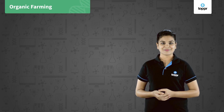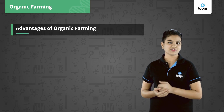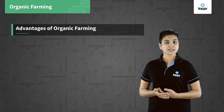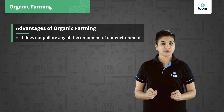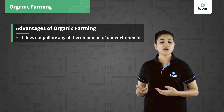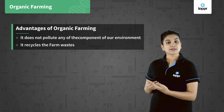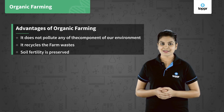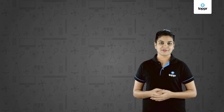The advantages of organic farming are: it does not pollute any component of our environment — land, soil, water, or air; it recycles farm waste; and it preserves soil fertility. In this lesson, we have seen how crop production can be increased by proper nutrient management — by providing nutrients to the soil through various types of manures, fertilizers, or by practicing organic farming.